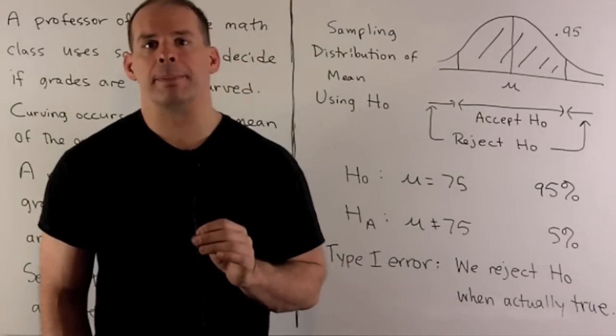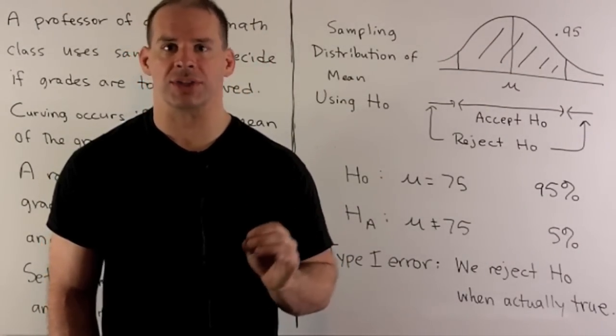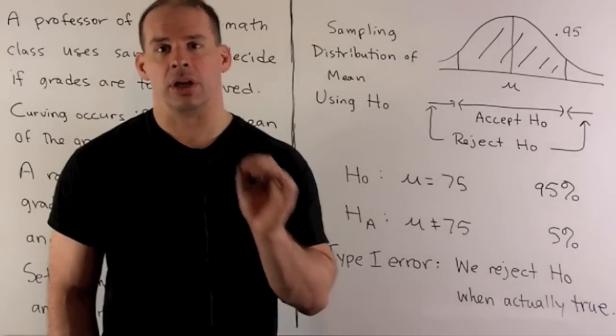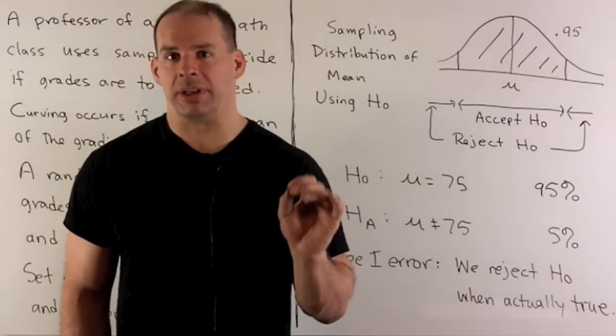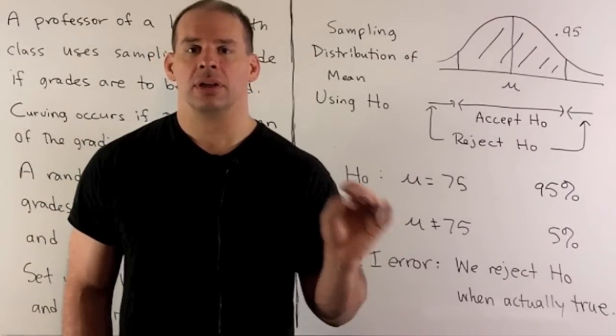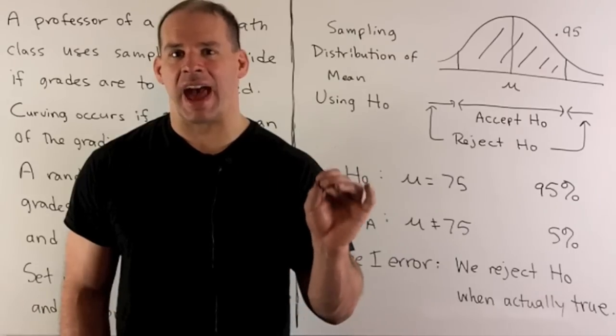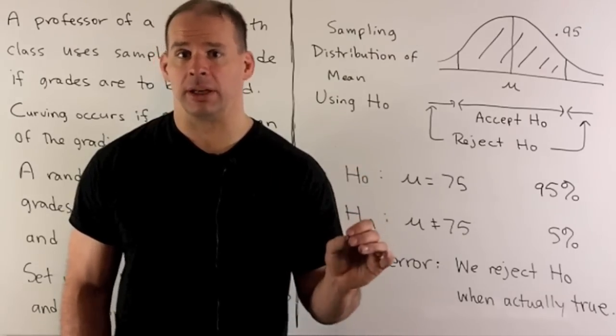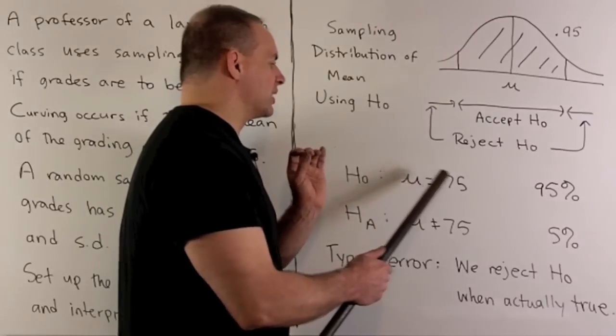Our first step is to set up the null hypothesis and the alternative hypothesis. In our case, we're testing the statement that unknown population mean μ is equal to 75. So the null hypothesis is always going to be our educated guess at the unknown population mean. So null hypothesis is μ = 75.